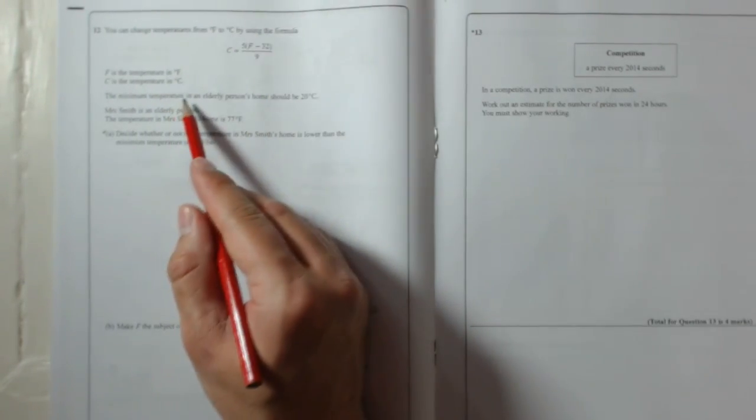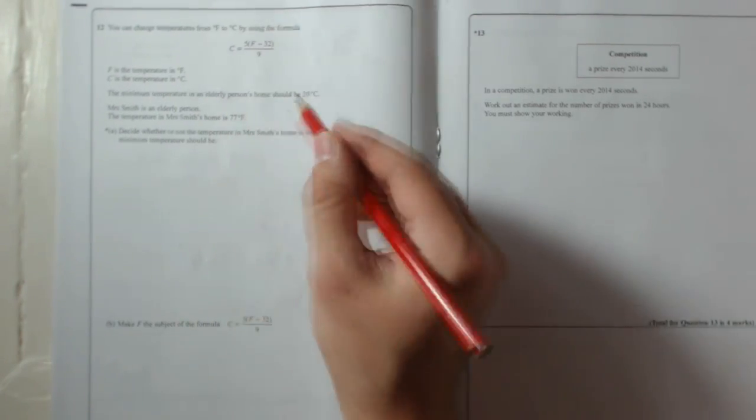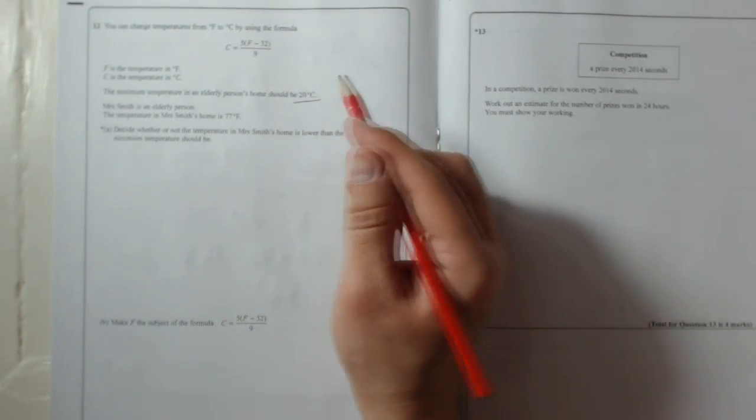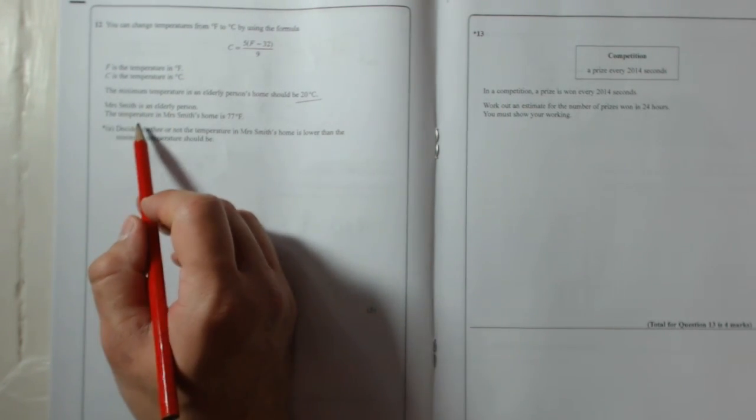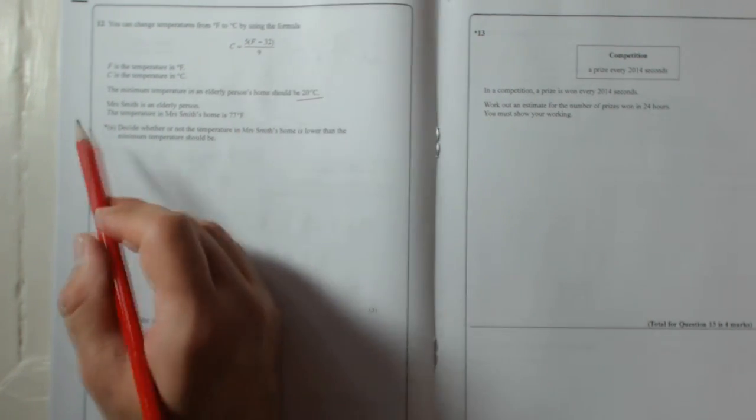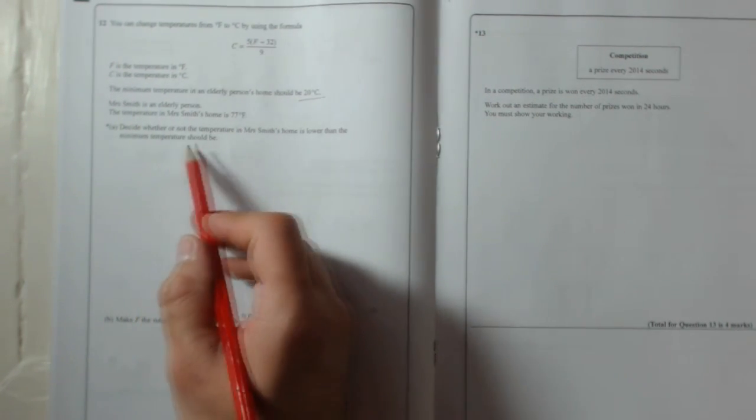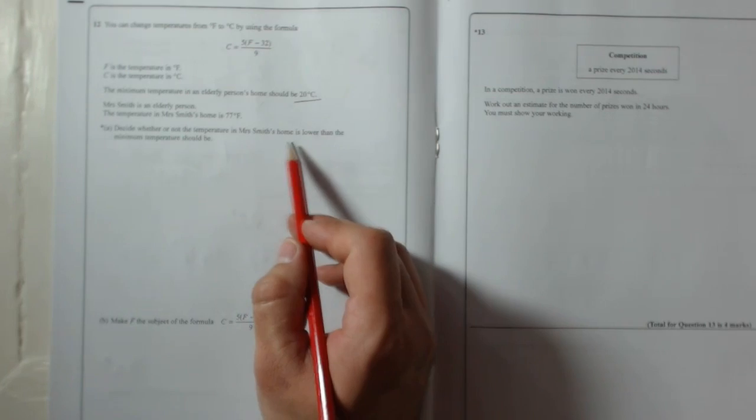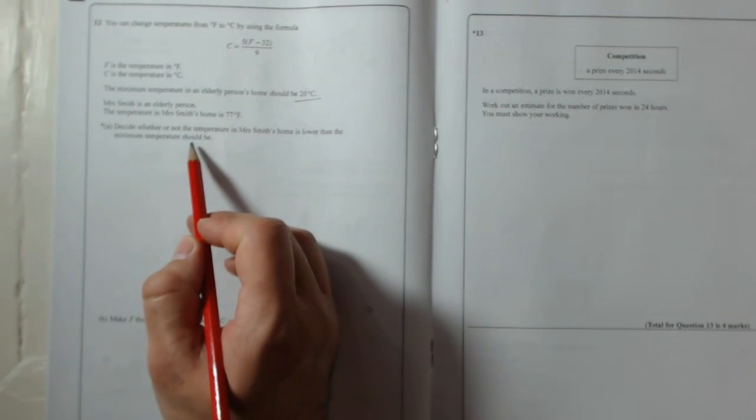F is the temperature in Fahrenheit and C is the temperature in Celsius. The minimum temperature in an elderly person's home should be 20 degrees Celsius. Mrs. Smith is an elderly person. The temperature in Mrs. Smith's home is 77 degrees Fahrenheit. Decide whether or not the temperature in Mrs. Smith's home is lower than the minimum temperature should be.